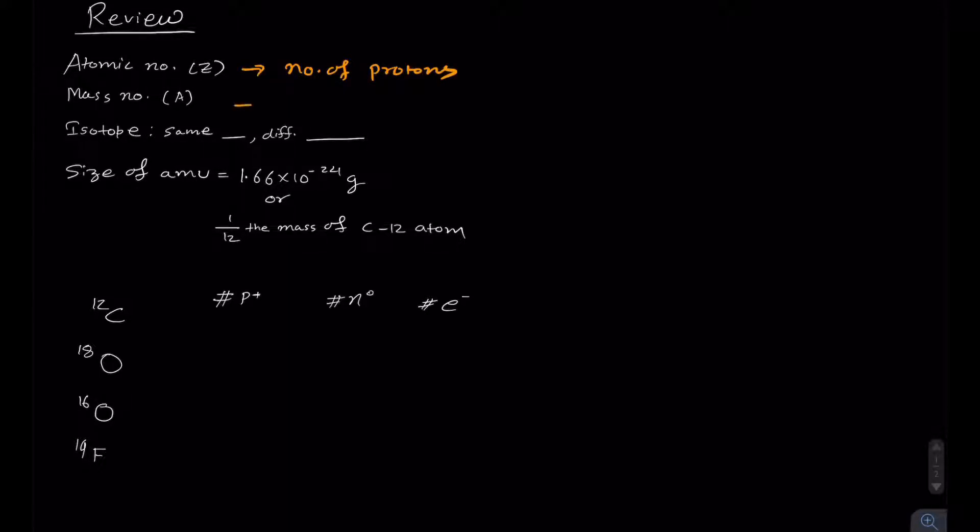We covered this already. If you don't know, you can go back and watch my videos. Mass number is number of protons plus number of neutrons. Isotope has same atomic number but different mass number. Size of atomic mass unit, often known as AMU, is 1.66 times 10 to the power negative 24 grams, which is also 1/12 the mass of carbon 12 atom.